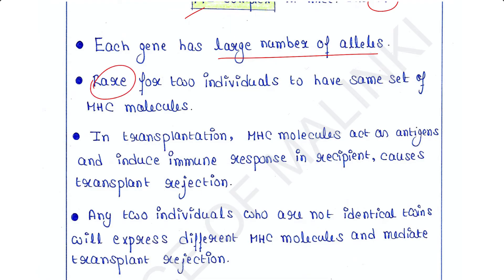In a transplant experiment, MHC molecules themselves act as antigens and induce an immune response in the recipient's body, causing transplant rejection. Any two individuals who are not identical twins will express different MHC molecules and mediate transplant rejection.